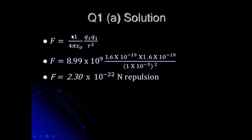For the first one, Coulomb's constant is 8.99 times 10 raised to 9. We are given the charges as 1.6 times 10 raised to negative 19 coulombs each, over the distance of 1 mm or 1 times 10 raised to negative 3 meters squared. The electrical force is equal to 2.3 times 10 raised to negative 22 N. Hence, this force is repulsion.